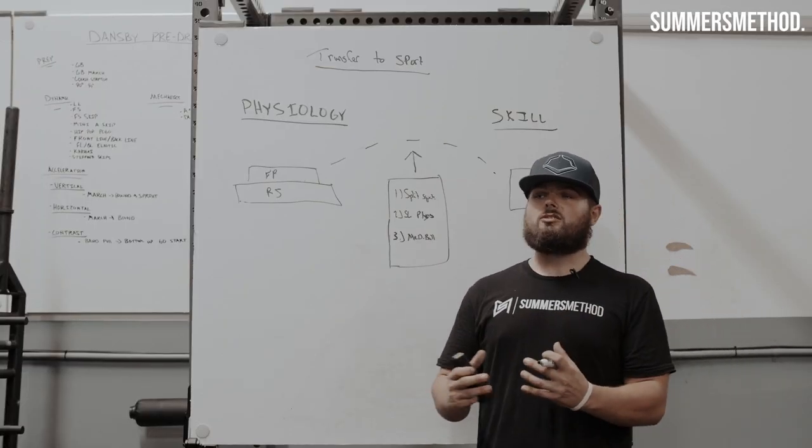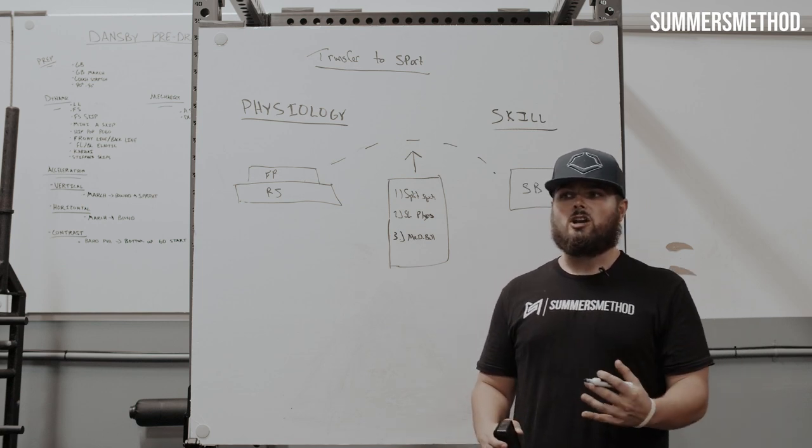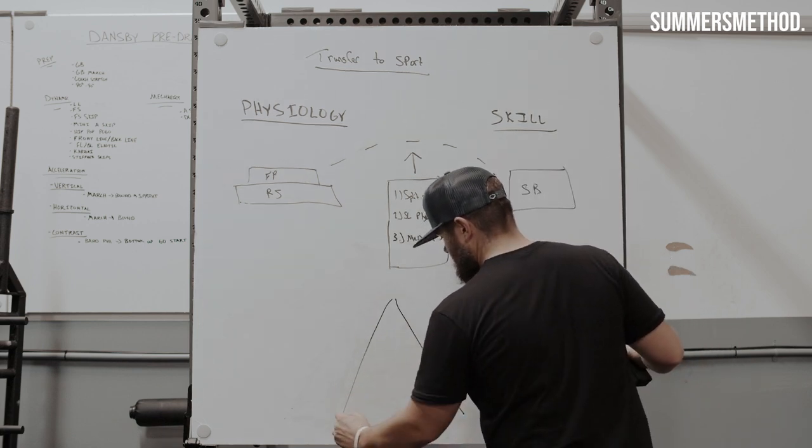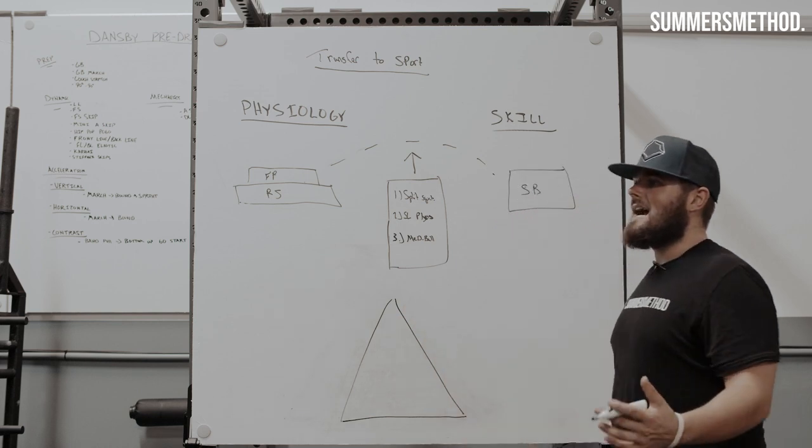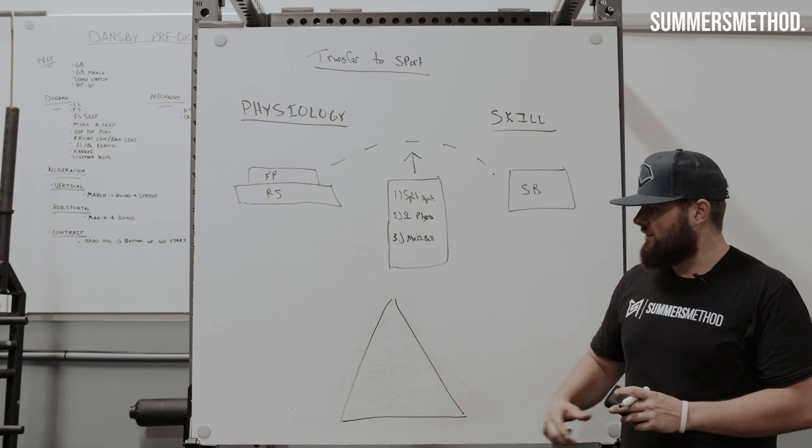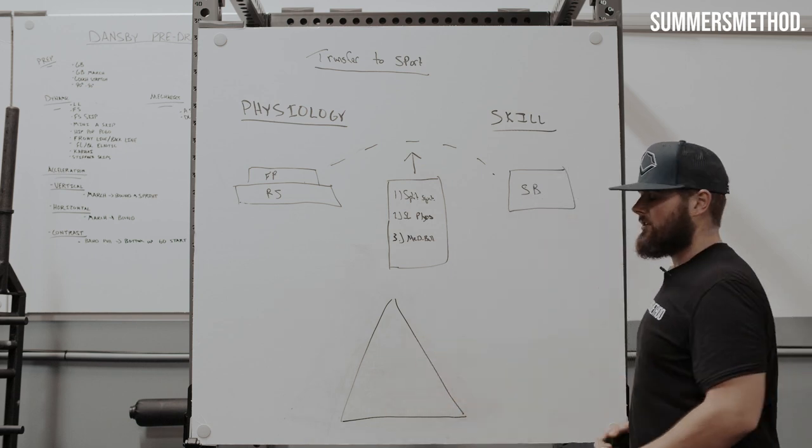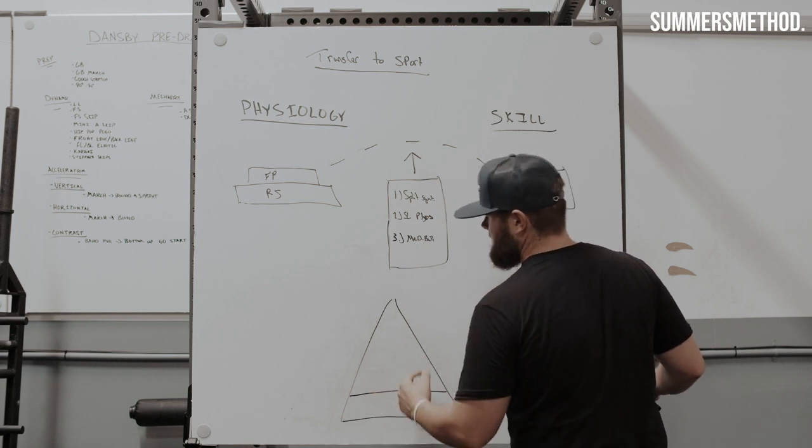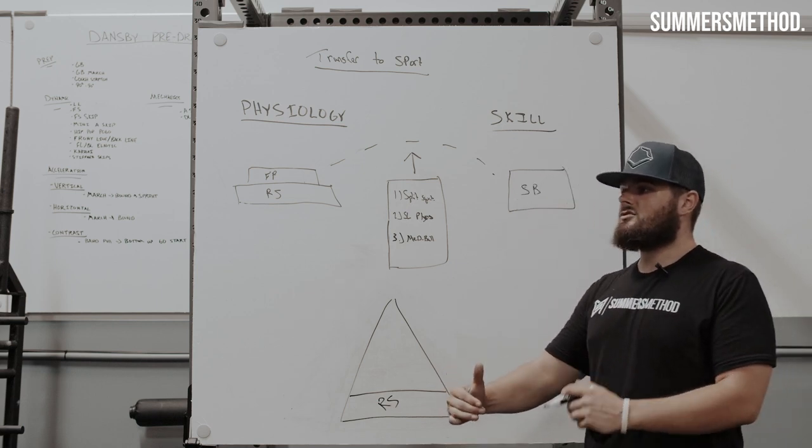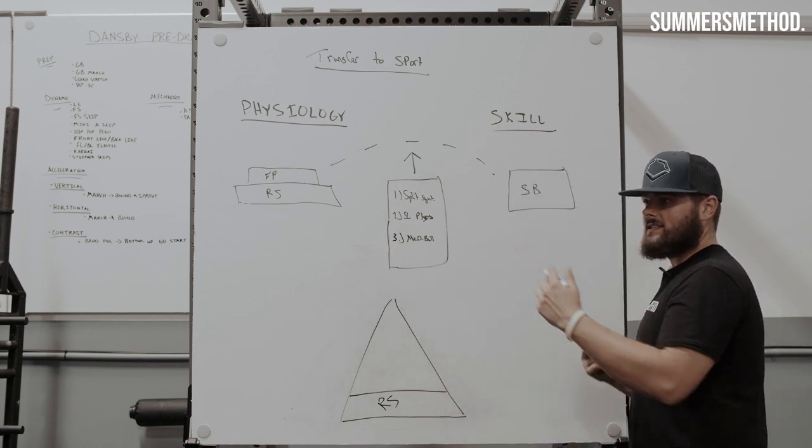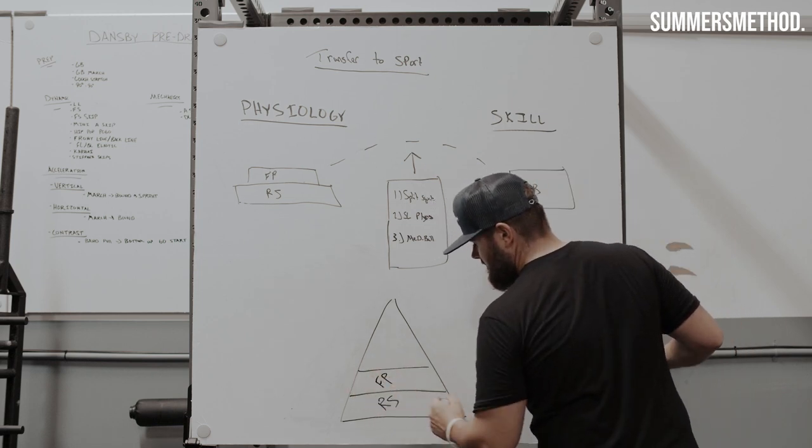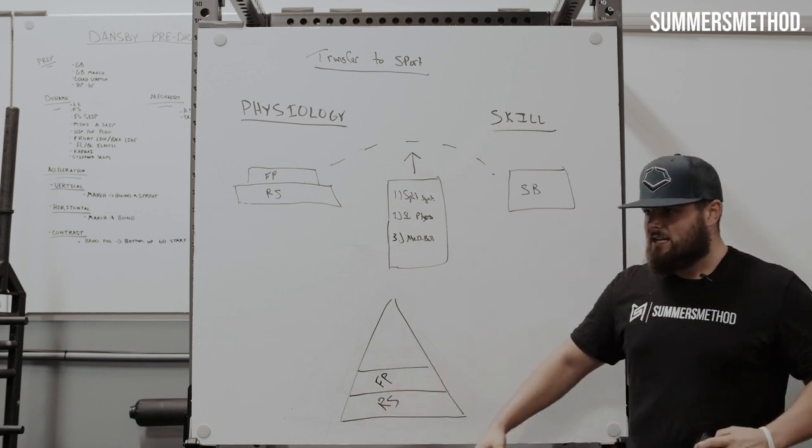I call it the hundred mile an hour pyramid. So if you get a guy that can hit baseballs with a hundred mile an hour exit velo, odds are that he has all these prerequisites that are in this pyramid. So the base, what is the base? Relative strength, meaning they have sufficient strength that allows them to move on to their force production. So what is the second layer of the pyramid? Force production or rate of force development through the base to relative strength.